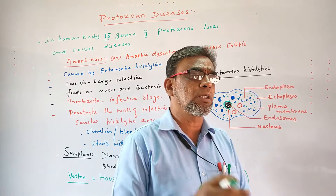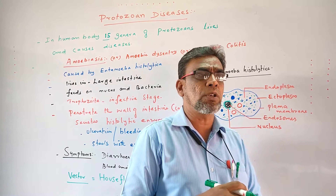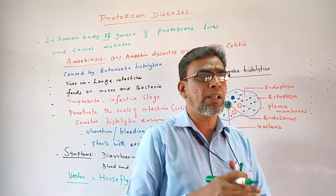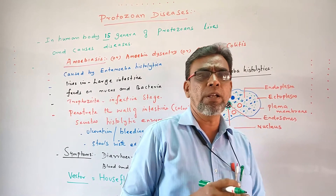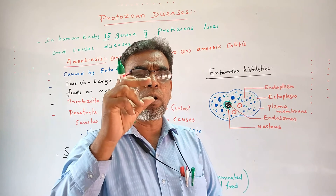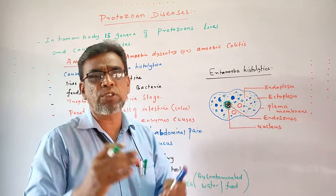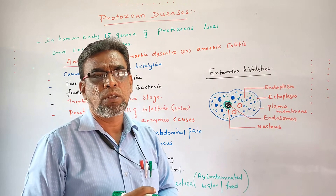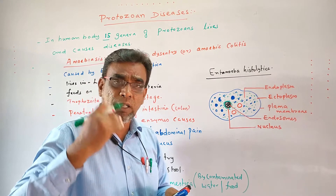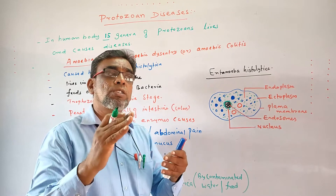You know protozoans are unicellular organisms. These protozoans also cause diseases in human beings. It is a real fact that in our human body, there are about 15 types of protozoans that live inside the body — 15 types of protozoans live inside the body even now. But some of these cause diseases.